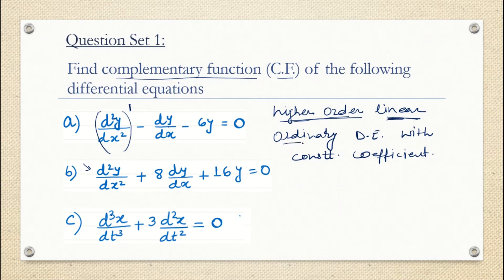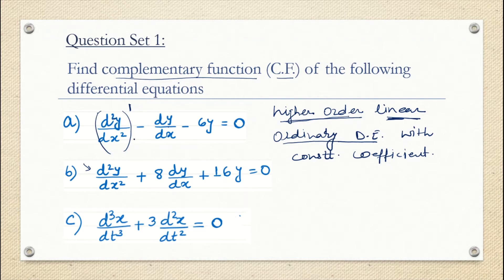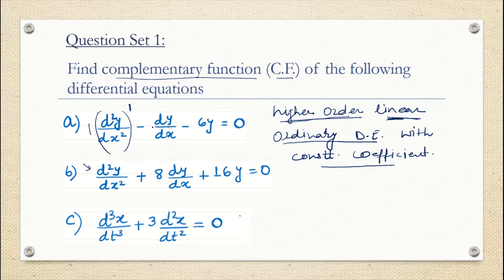The third part is ordinary differential equation. We call it ordinary because it is free of any partial derivatives — we don't have any partial derivatives present here. Partial derivatives will be seen in coming classes. The fourth property is constant coefficients. If you see, all terms have constant coefficients: here the coefficient is 1, then 1 again, then 6, 16, 8, 1. So these are called higher order linear ordinary differential equations with constant coefficients.